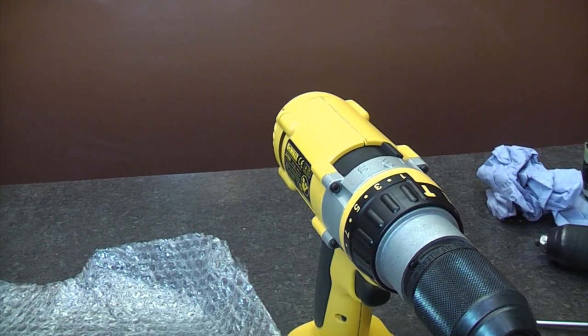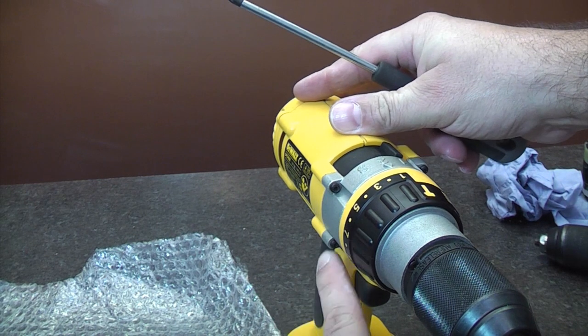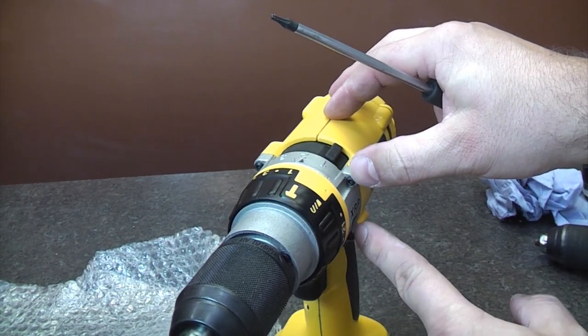So we can leave the battery on, and all we need to do is remove these four screws, which are Torx edge screws.